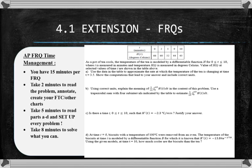Go ahead and move on to the extension sub work that you received today for 4.1. On the front page, you will see a problem from the test. This is the second problem from the test. We'll go over the third problem from the test tomorrow, and you will receive back your test as well. So like we discussed yesterday, you have 15 minutes per FRQ question. You want to take 2 minutes to read the problem, annotate, create your FTC chart, anything else you need to do, and then take 5 minutes to read parts A through D and set up every problem. Finally, you will take 8 minutes to solve what you can.